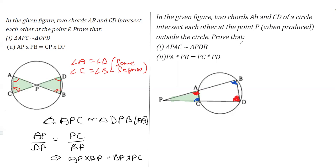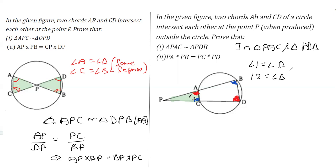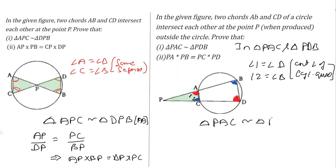We consider the same two triangles: triangle PAC and triangle PDB. Marking the angles — call this angle 1 and this angle 2 — we can say angle 1 equals angle D and angle 2 equals angle B, by the exterior angle property of a cyclic quadrilateral.